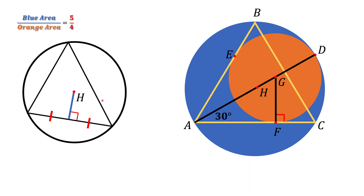However, we don't have an arbitrary triangle — we have an equilateral triangle. In an equilateral triangle, the perpendicular bisectors, regular side bisectors, altitudes, and angle bisectors all represent the same lines. This means that in equilateral triangle ABC, point H lies on the angle A bisector, as well as on the angle B and angle C bisectors.